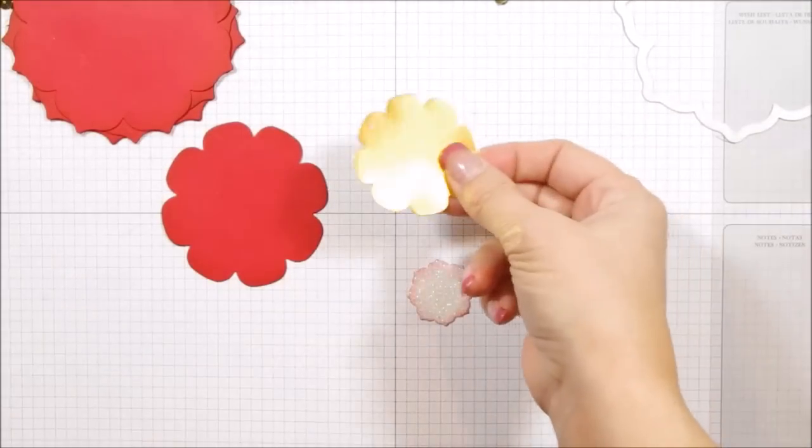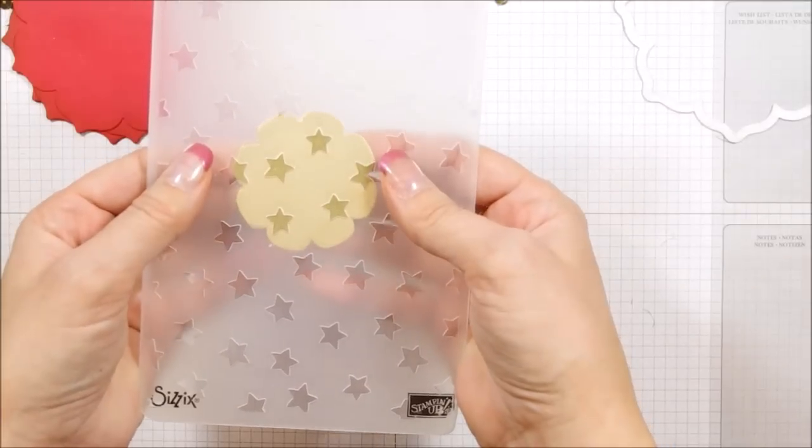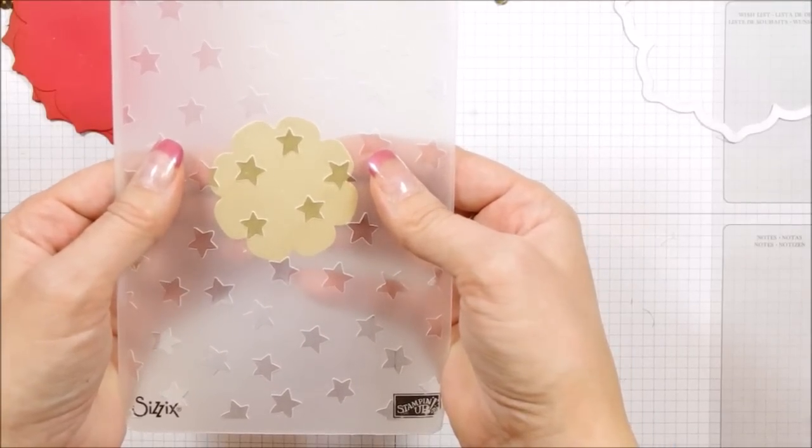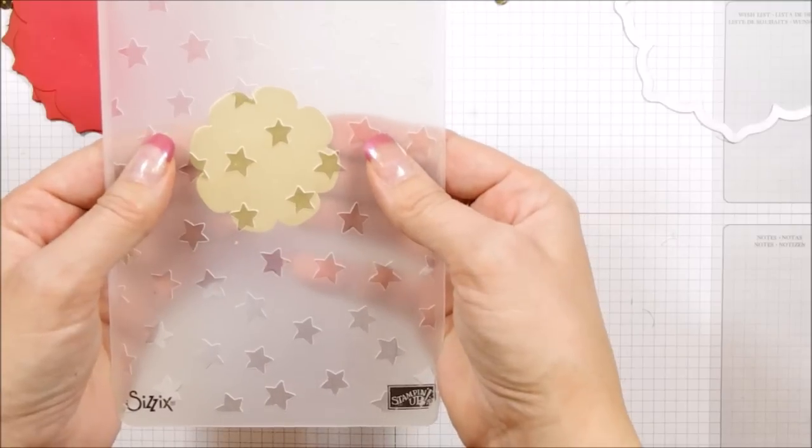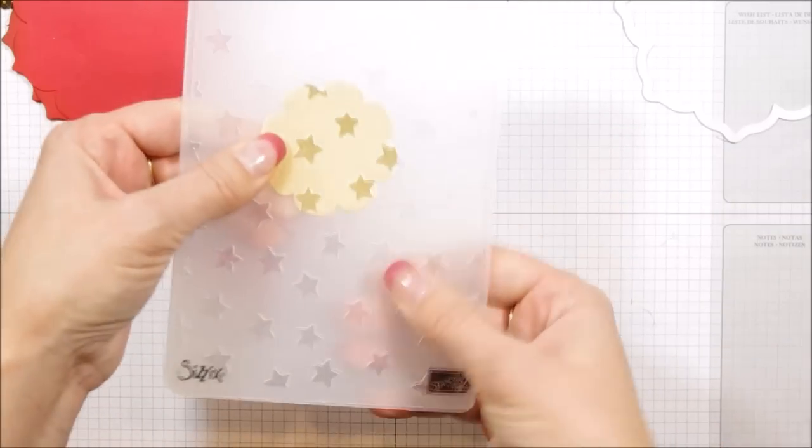So with this layer here, we're going to use our Lucky Stars embossing folder, and we're just going to run that through the Big Shot and add some of the stars around it. So I want more at the edges so I can kind of see them. So just kind of move things around until you like the position, and we're going to put that through the Big Shot.